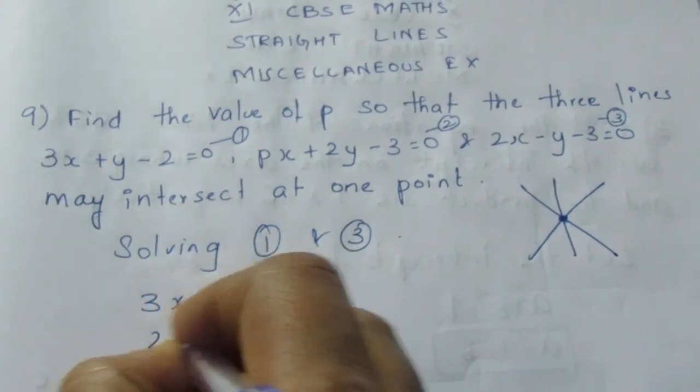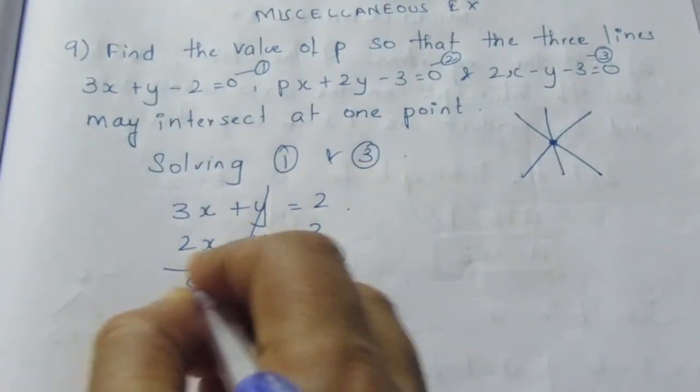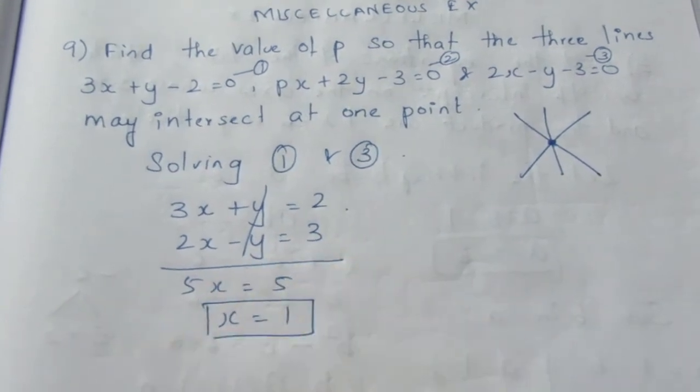Here, 2x - y = 3. Solving these two, that is adding them, I get 5x = 5, so x = 1. 5 divided by 5 equals 1.